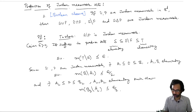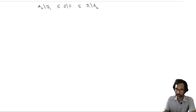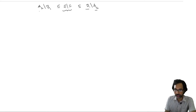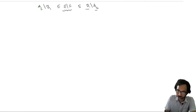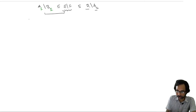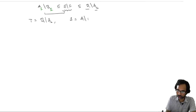Now I will use the sets B1, B2, A1, A2 to produce T and S. We have set inclusions: E minus F is included in B1 minus A2, because E ⊆ B1 and A2 ⊆ F. Similarly, since A1 ⊆ E and F ⊆ B2, we have A1 minus B2 ⊆ E minus F. So we take T = B1 minus A2 and S = A1 minus B2.